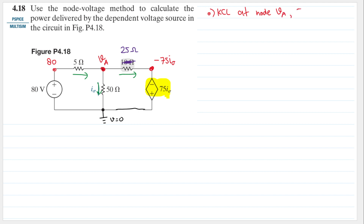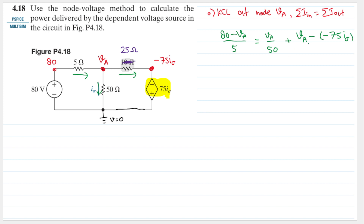KCL states that the sum of the currents going in equals the sum of the currents going out. The only current going in passes through the 5 ohm resistor, giving us (80 − Va)/5. The currents going out are Va/50 and then Va minus (−75·i_sigma), which is (Va + 75·i_sigma), all divided by the resistance between them.